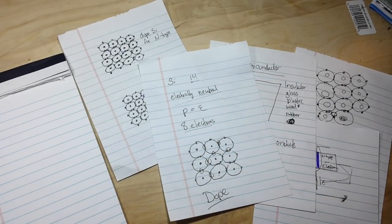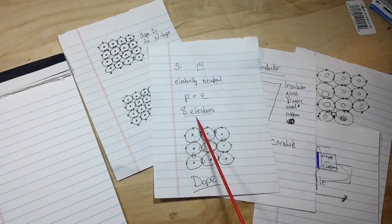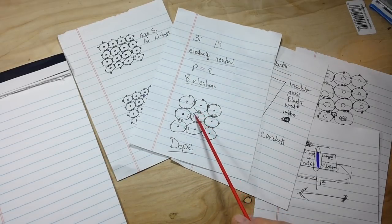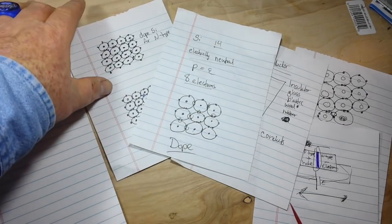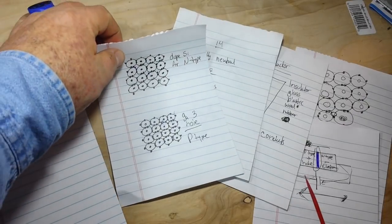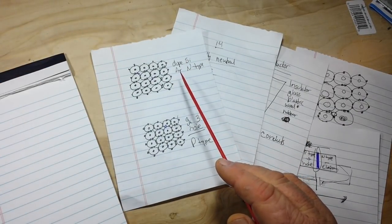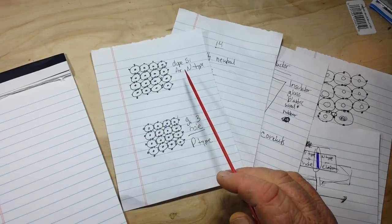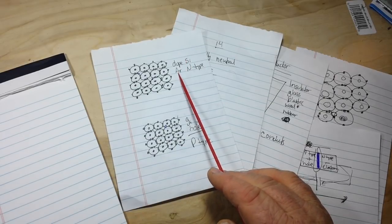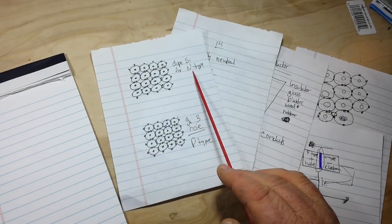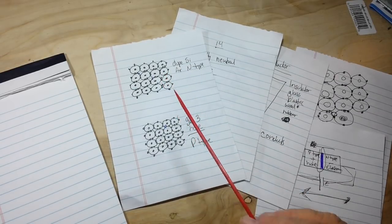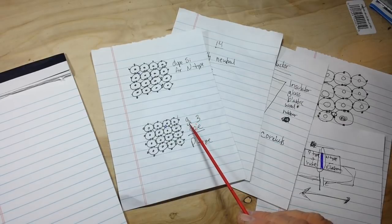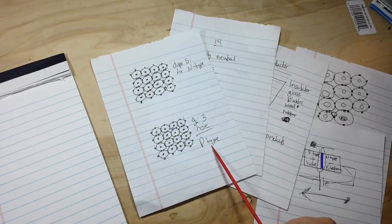We discussed how they want to have eight electrons in their outer shell and how they will share electrons with each other to achieve this. Then we finished up by talking about doping the silicon matrix. If we dope it with argon we end up with an N-type, a negative type, because it has an excess of electrons. And doping with gallium makes it a P or positive type because it has an excess of holes.